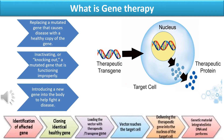In gene therapy, there are three options which we can use to carry out this process. The first option is replacing a mutated gene that causes disease with a healthy copy of that gene. The second option is we inactivate or knock out the mutated gene that is causing the problem. The third option is introducing a new gene that will be beneficial for the organism.